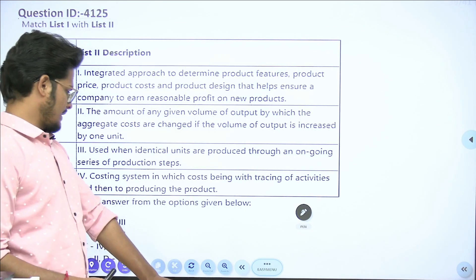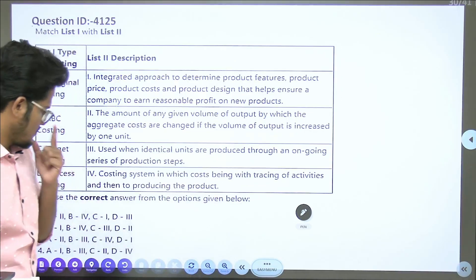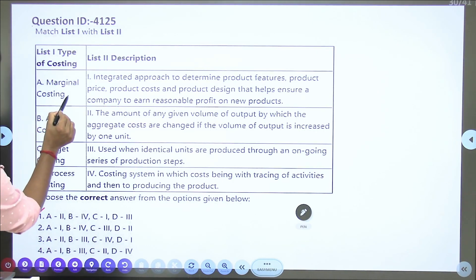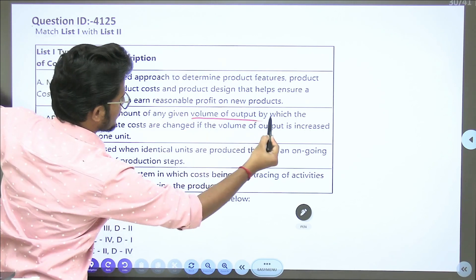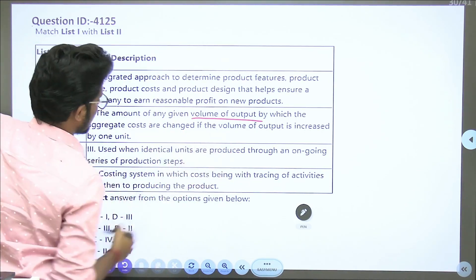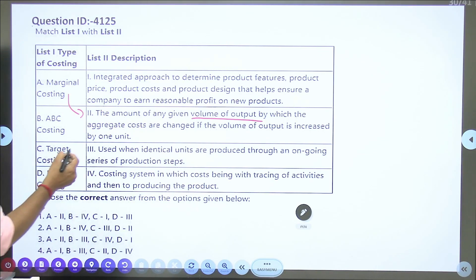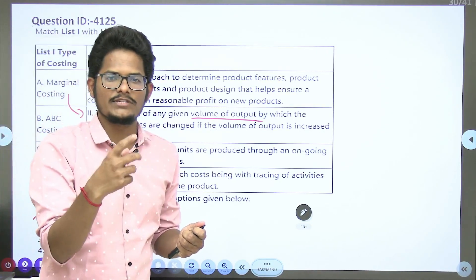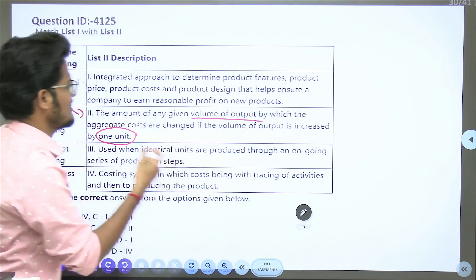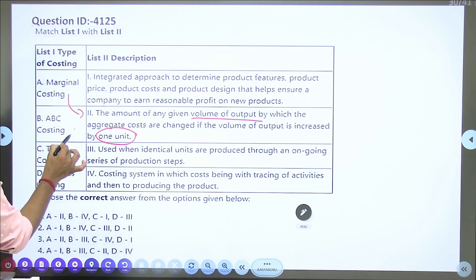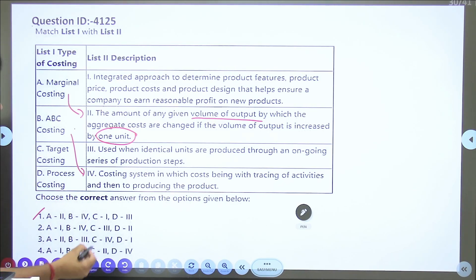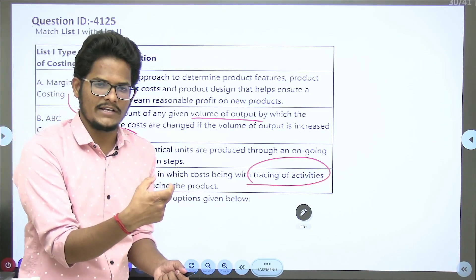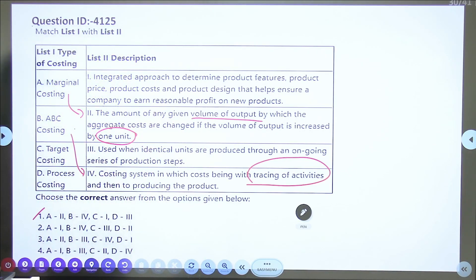Next question: marginal costing, ABC costing, target and process costing. Answer is A2, B4. Marginal costing is the amount by which aggregate costs are changed if volume of output is increased by one unit. Cost incurred for producing one additional unit is marginal cost. ABC costing involves tracing of activities, identifying cost driver related to that activity and assigning cost to that product.